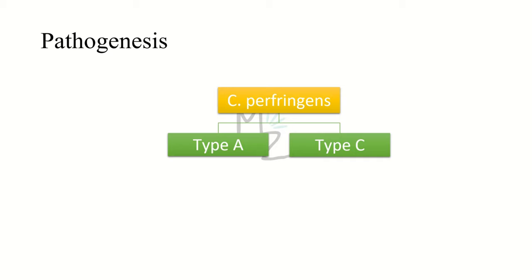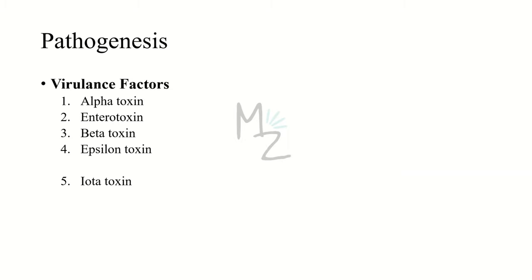Pathogenesis. Clostridium perfringens is divided into types A through E, but types A and C are of the highest yield. Type A is responsible for causing most human diseases, while type C is responsible for causing necrotizing enterocolitis. This organism grows in traumatized tissue, especially muscle, and produces a variety of toxins.